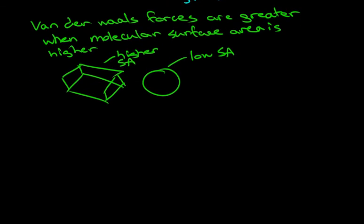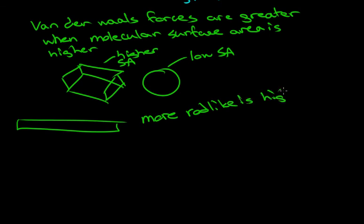And so we can conclude from this that if you have higher surface area, you have greater intermolecular forces. So higher or less spherical and longer. The longer an object is, the higher the surface area is. So if it's more rod-like is higher boiling point. Whereas a sphere has a low boiling point.